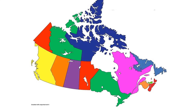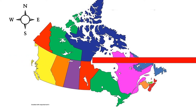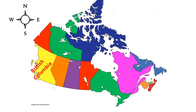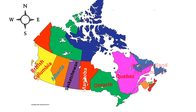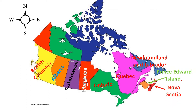Let me list all the provinces from west to east. At the west coast we have British Columbia, then Alberta, Saskatchewan, Manitoba, Ontario, Quebec. Then we have Newfoundland and Labrador. Then you can see a tiny small green island — that's Prince Edward Island. When you come down, you can see Nova Scotia and New Brunswick.